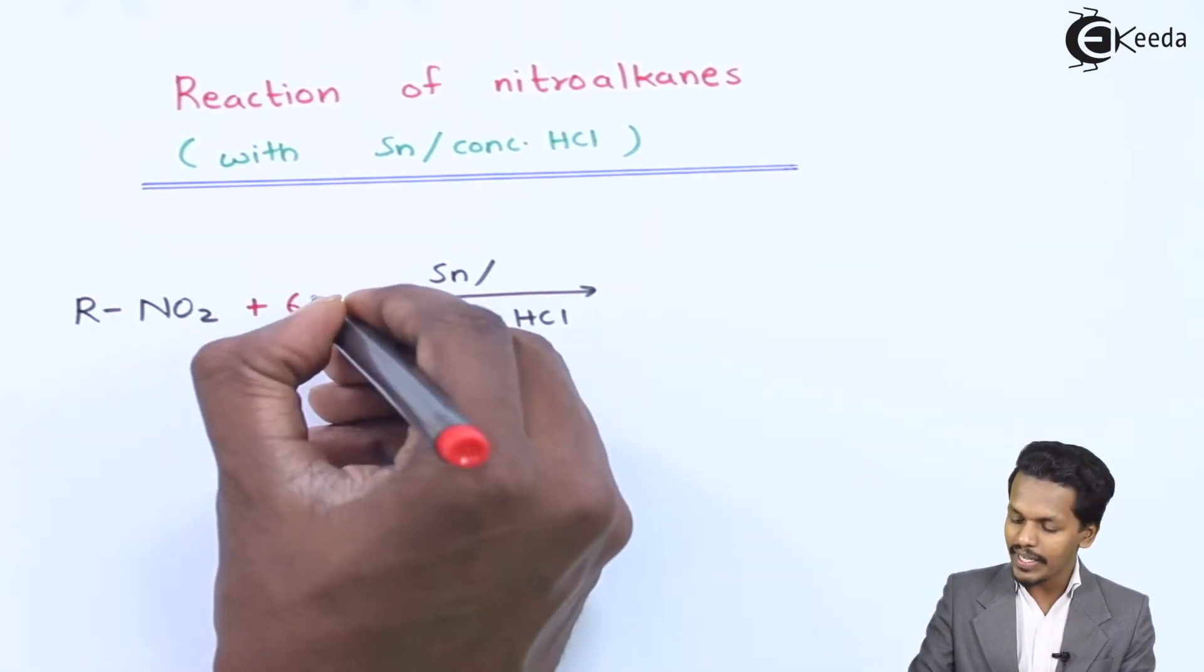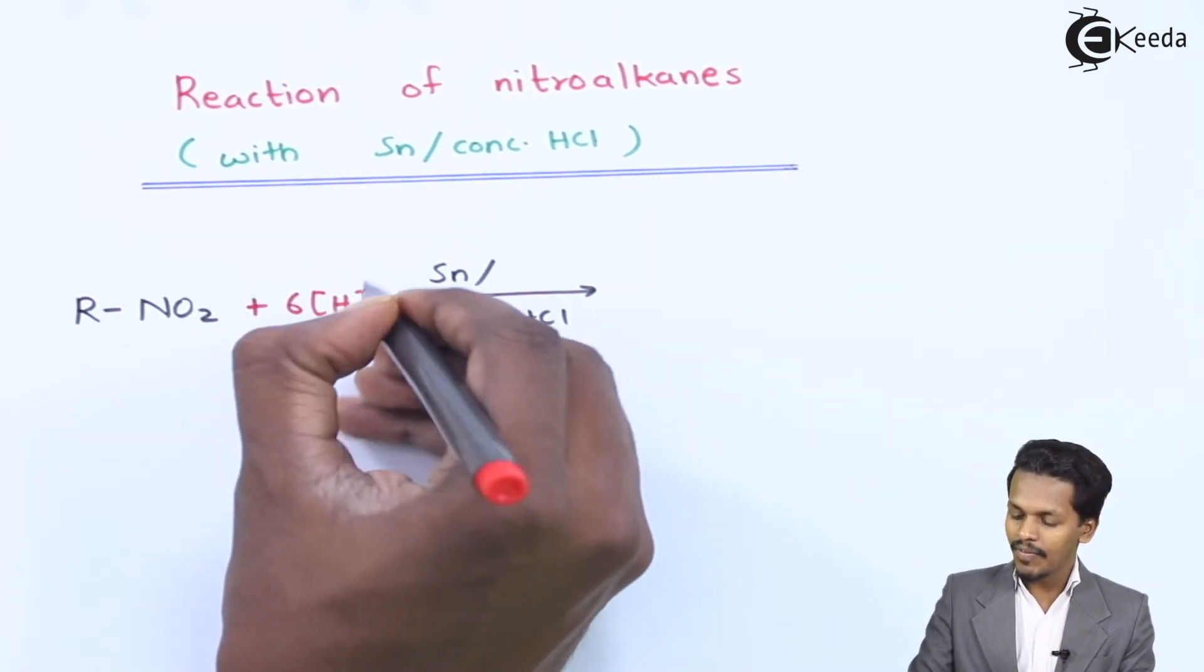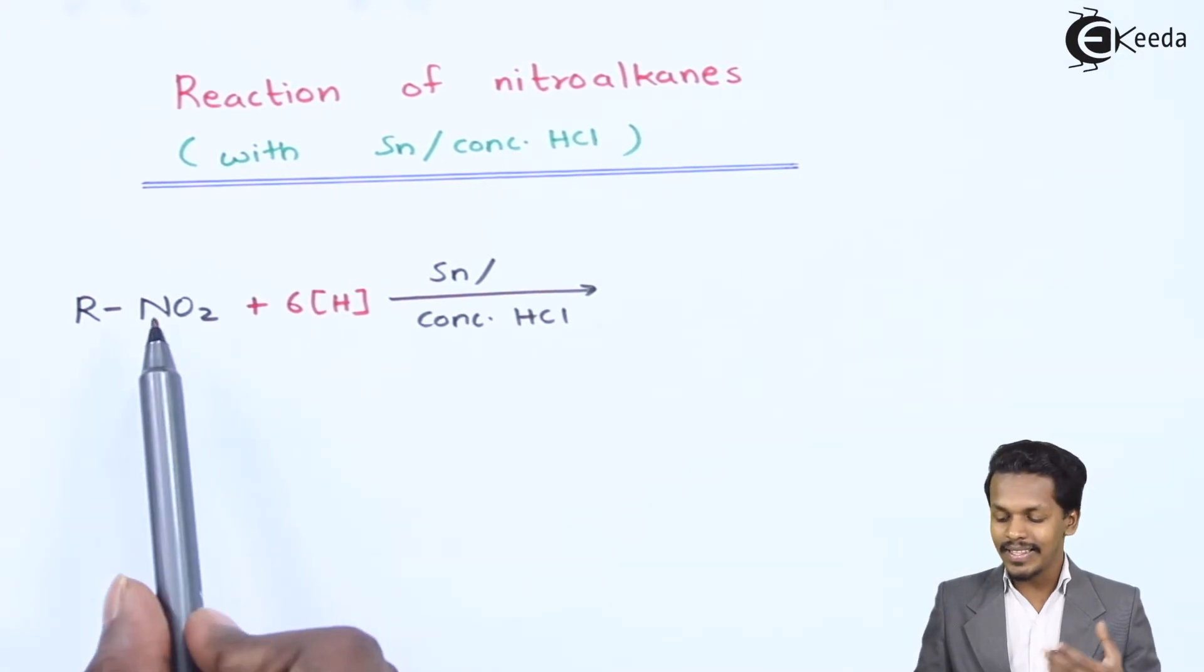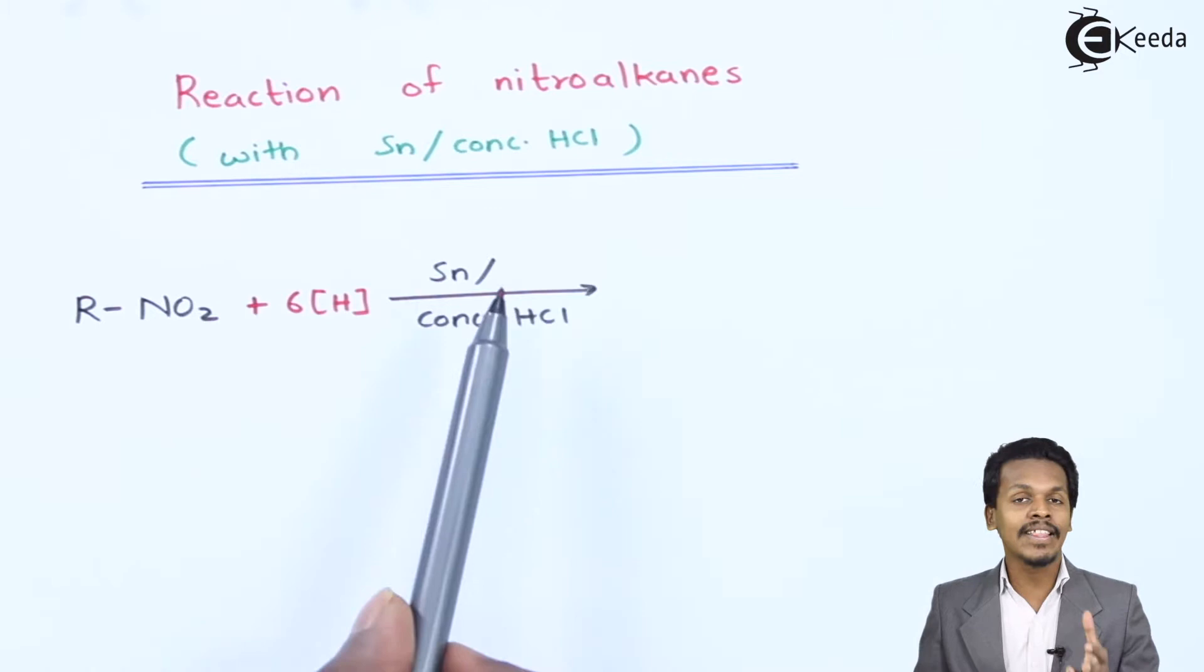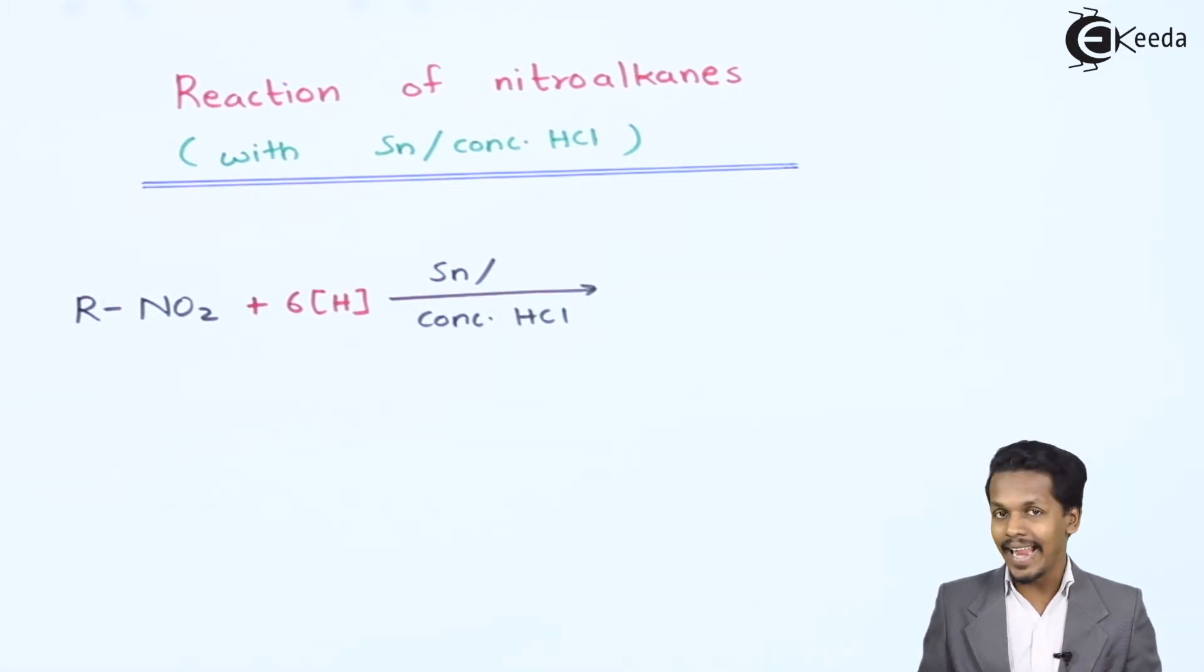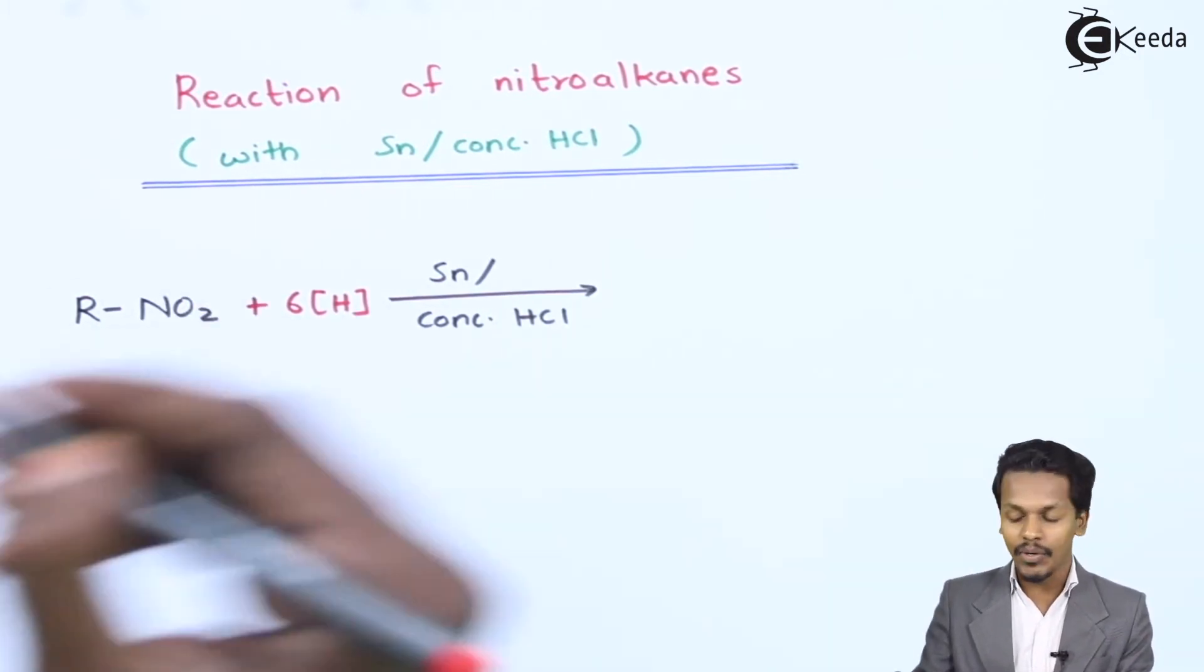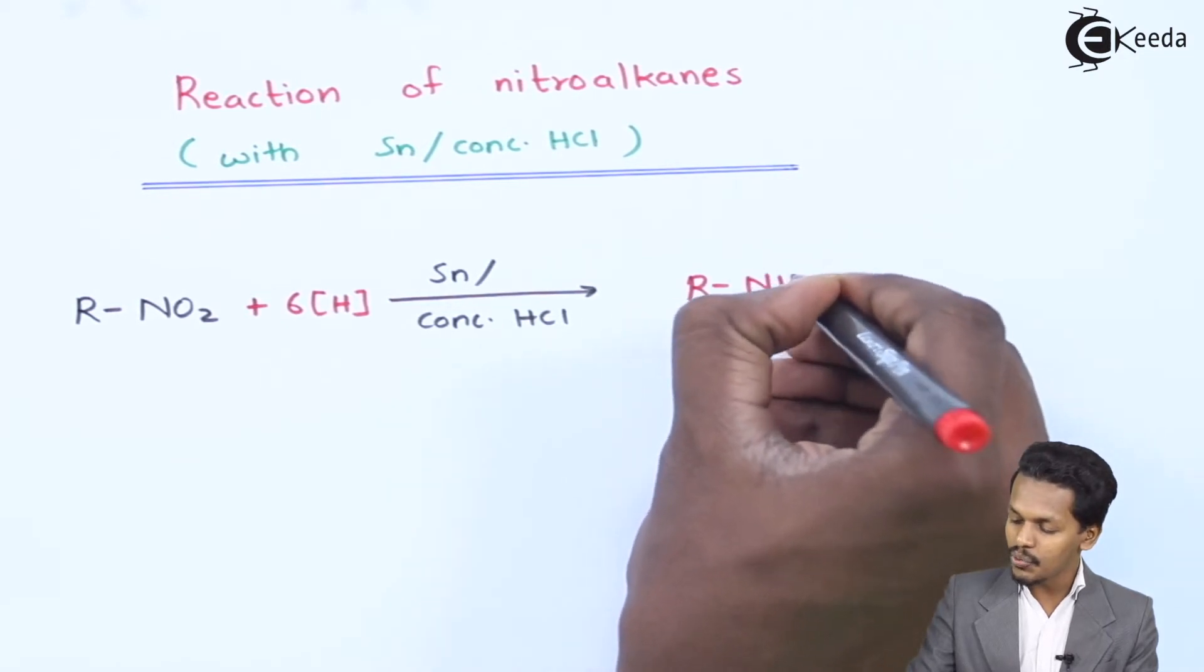That nascent hydrogen will be very helpful in converting this NO2 group into NH2 group. Obviously this acts like a reducing agent. So the product that we could get is R-NH2.